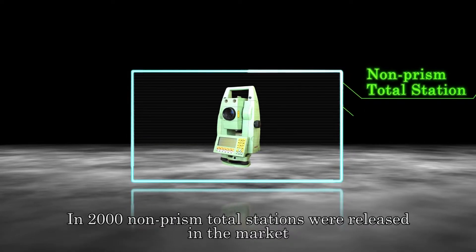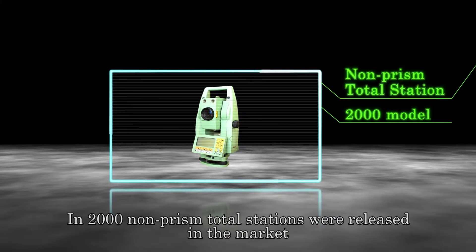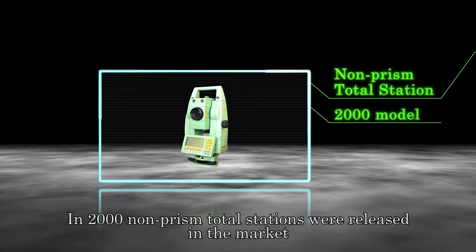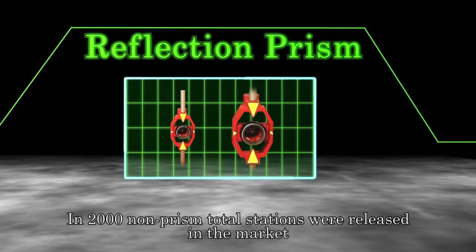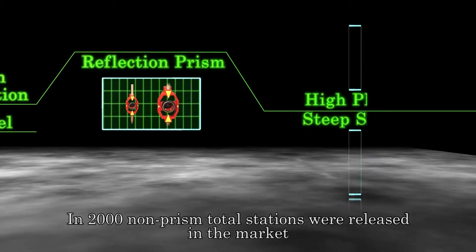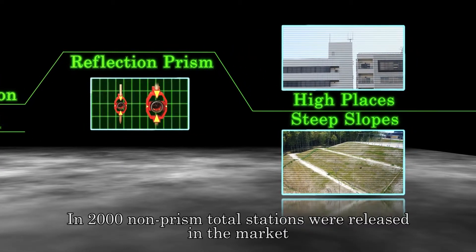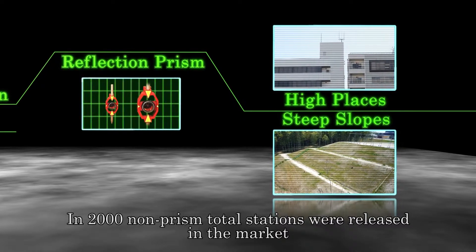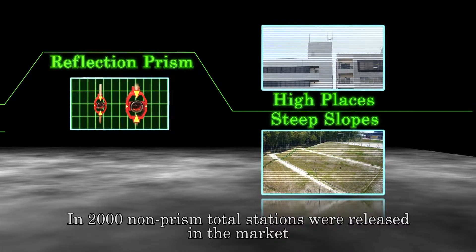In the year 2000, the first non-prism total station was released. Because a reflective prism was not necessary, there was the expectation the application range of this technology would extend to one being able to take measurements safely and efficiently in previously hard to reach and hazardous areas such as high places and slopes.